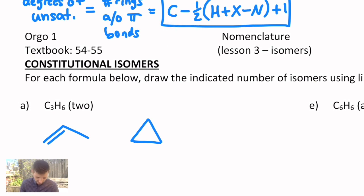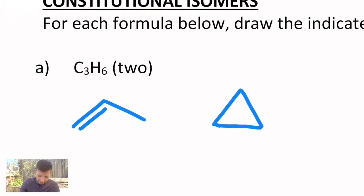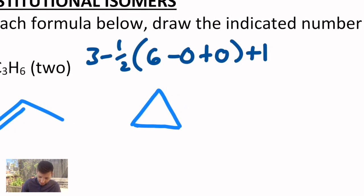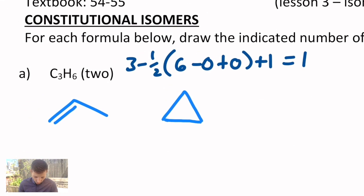Notice oxygen doesn't show in this formula, so it doesn't affect the degrees of unsaturation, nor does sulfur. I suppose if we had a phosphorus, it would be the same as a nitrogen. A silicon, if we had an organosilane, would be the same as carbon. But these are the main elements we're going to be looking at. So if I calculated this for C3H6, it would be three minus one half of six, minus zero, plus zero, plus one, and you get one. So we have one unsaturation, one pi bond, or one ring.